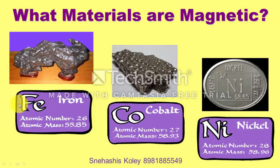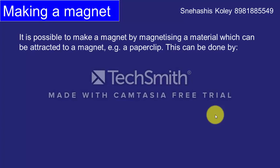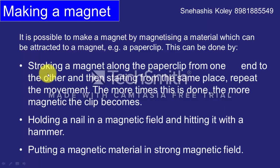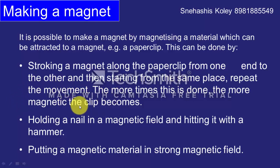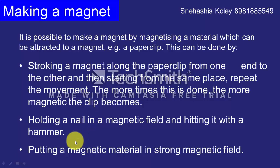In this slide, the atomic number and mass number of the magnetic materials are given. Methods of magnetization: the process by which a magnetic substance such as iron is converted into a magnet is called magnetization. First, stroking a magnet along a paper clip from one end to the other repeatedly can make the clip magnetic. Second, holding a nail in a magnetic field and hitting it with a hammer will also make the nail magnetic. Third, putting a magnetic material in a strong magnetic field will make the substance magnetic.